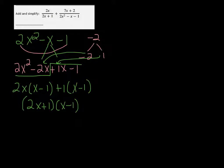We can see that the first fraction is missing that x minus 1. So we're going to multiply the top and the bottom of that fraction by x minus 1 so that it has it.